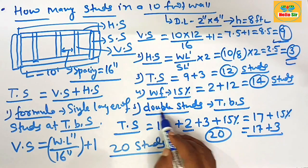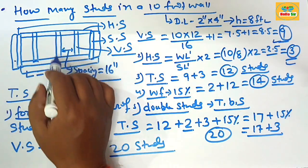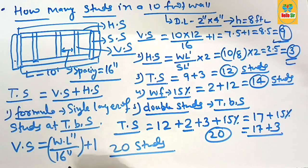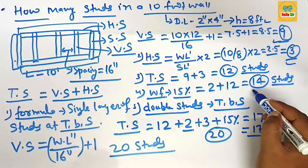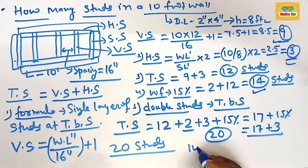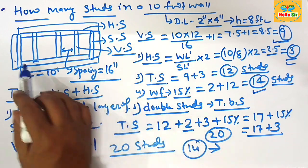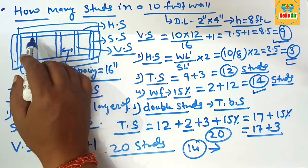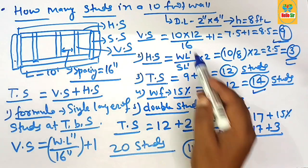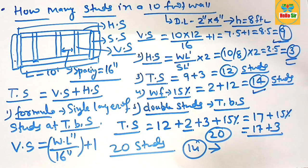In summary, you need approximately 14 studs if you use single studs at the side wall, top, and bottom wall for a 10-foot wall. If you use double studs, you need approximately 20 studs. Thank you.